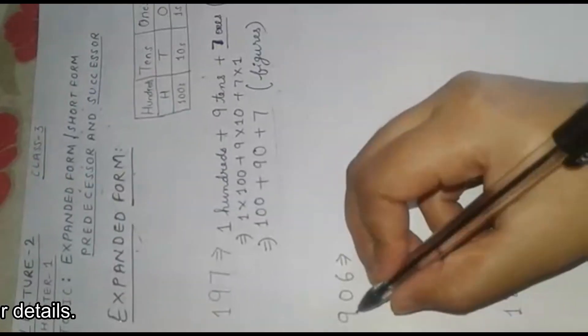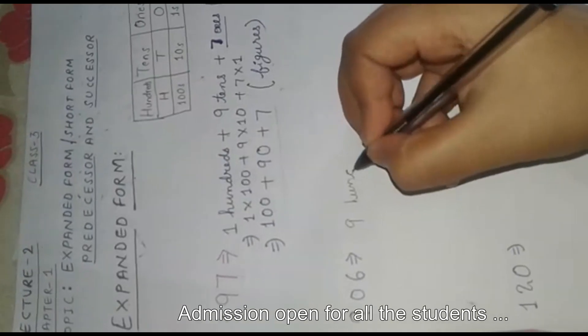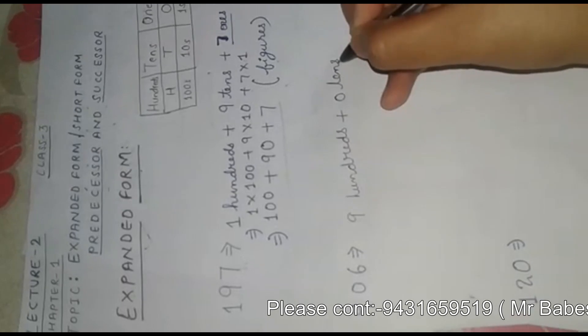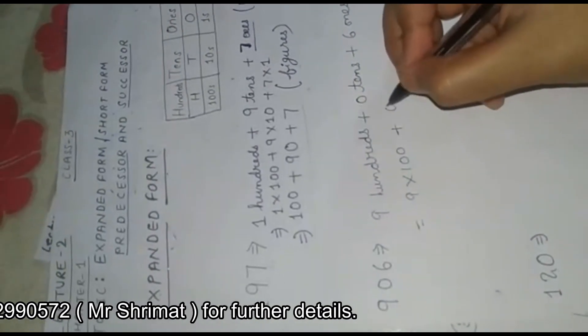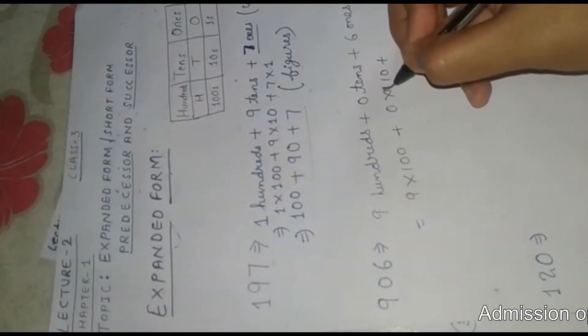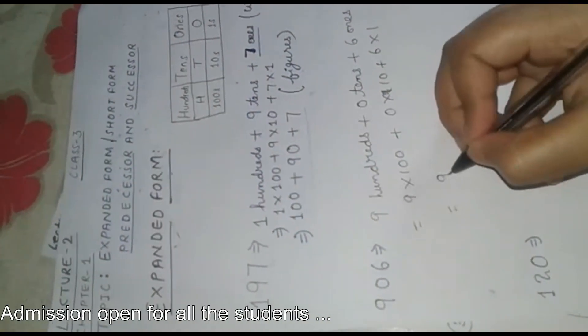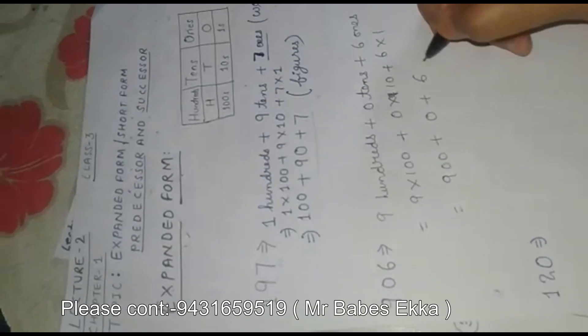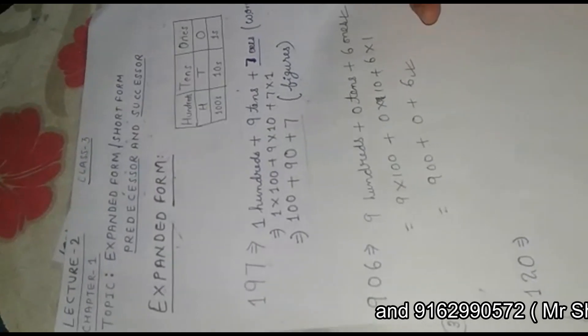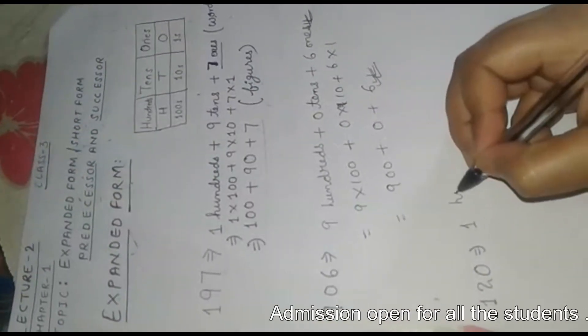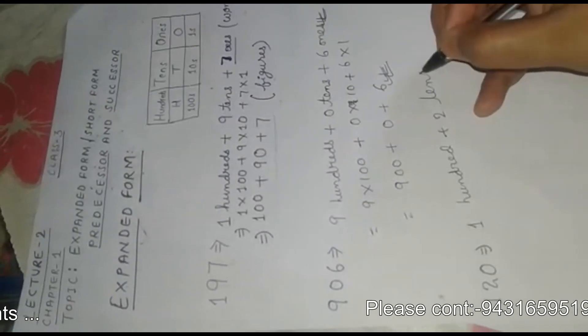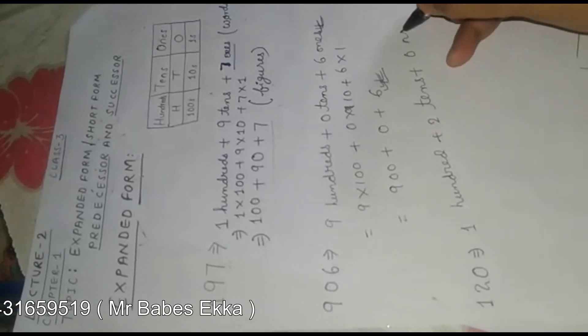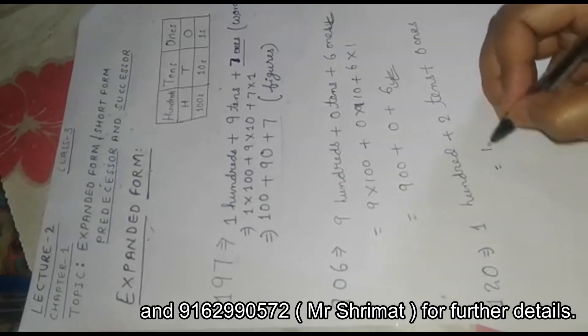Let us see another example. For 906, we write 9 hundreds plus 0 tens plus 6 ones. In figures: 9 into 100 plus 0 into 10 plus 6 into 1, which becomes 900 plus 0 plus 6. Let us take one more example. For 120, we write 1 hundred plus 2 tens plus 0 ones, which becomes 100 plus 20 plus 0.